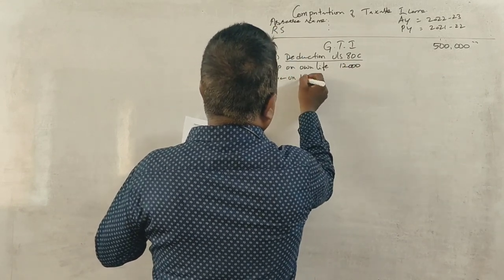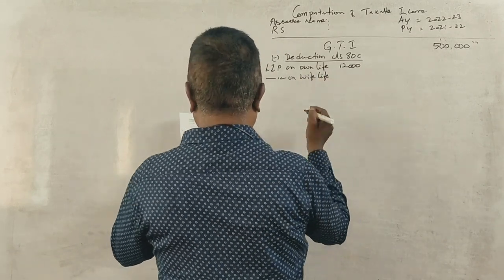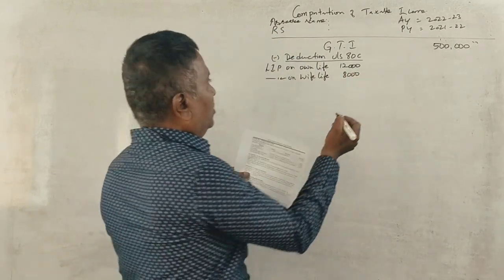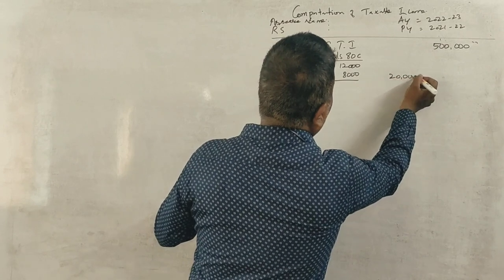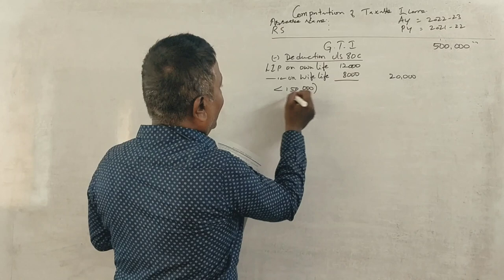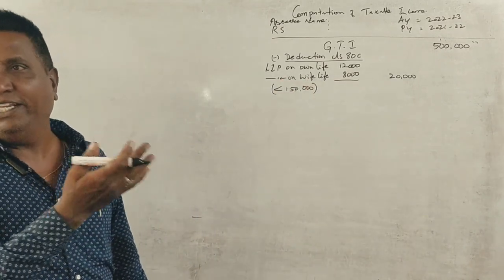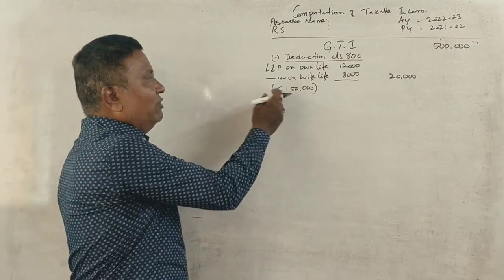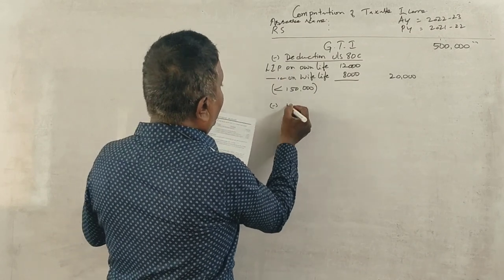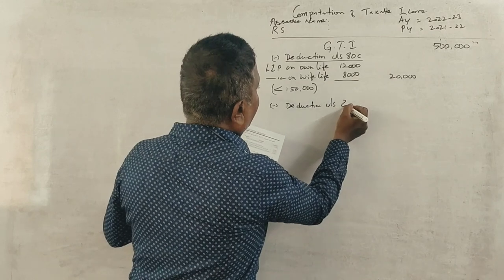On wife's life, 8,000. Totally how much? 20,000. So, less than 1,50,000 rupees. Since this is less than the maximum limit of 1,50,000, the full amount will be allowed under section 80C.